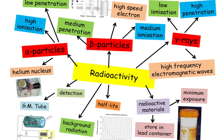There's alpha particles, beta particles, and gamma rays. Alpha particles are helium nuclei with a high ionization but with a low penetration and can be blocked by a piece of paper.